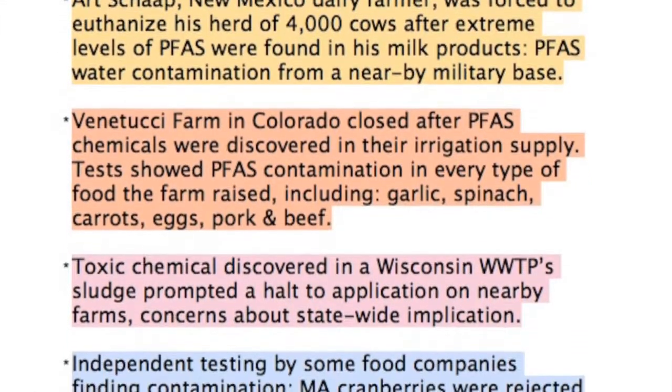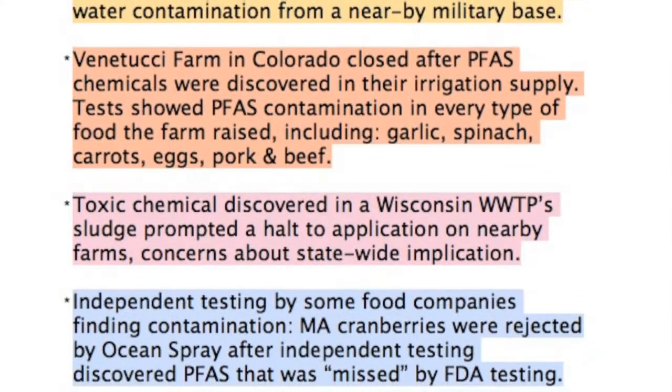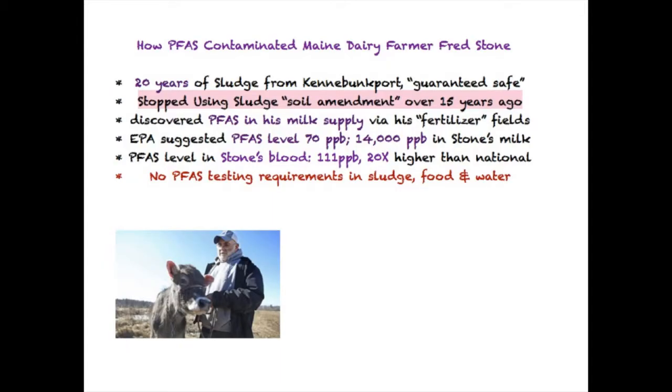The big thing in the news in the farming community right now is PFAS found in the milk supply. Specifically, a farmer in Maine named Fred Stone who accepted sludge for 20 years from the city of Kennebunkport. He has not spread for 15 years. The discovery was his milk was so contaminated with PFAS he had to stop selling. They did a blood test on him — the average American PFAS level in your blood is 4.2; his was 111 from drinking his own milk and living on his own farm.